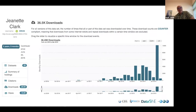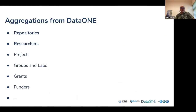In this case we're showing downloads for Jeanette's work — about 36,500 downloads of her datasets over time. Overall, we're reporting these aggregations for repositories and researchers right now. We've built our infrastructure to be flexible enough to also report other types of aggregations: for individual research projects, groups and labs, grants and awards, funding programs, funders, and other types of aggregations and collections that are useful to the community. We're looking forward to providing all that as a set of services from DataOne in the near future.